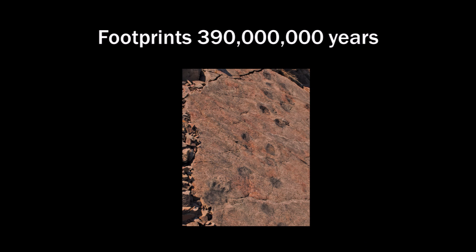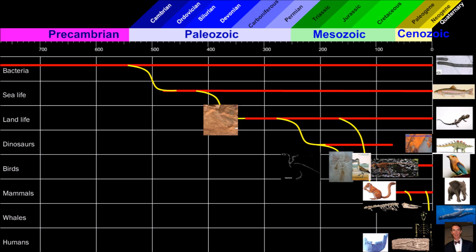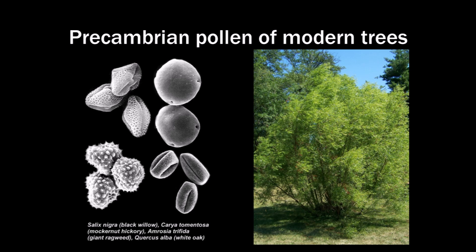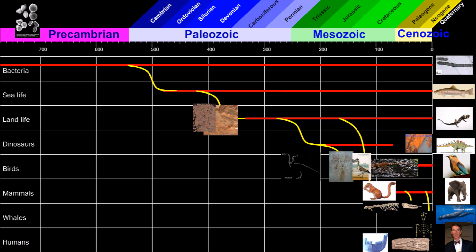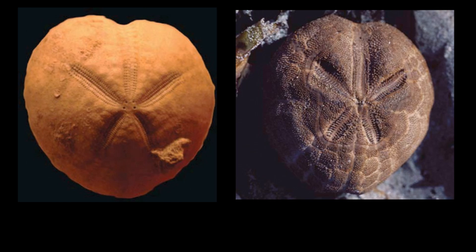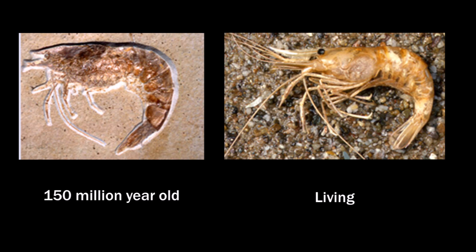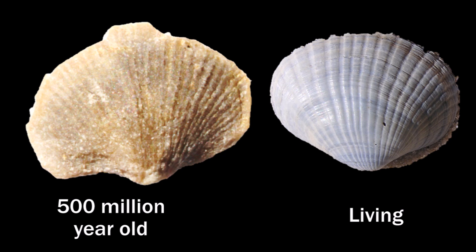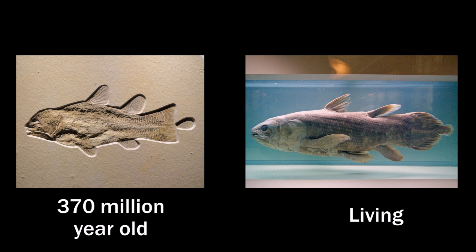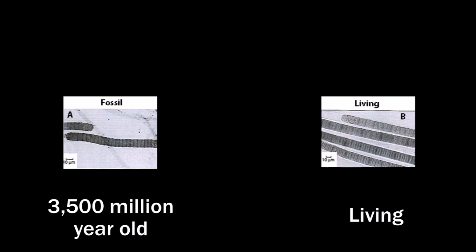Tetrapod footprints are found to be 10 million years older than the so-called transition Tiktaalik. There are pollen found of modern trees in the pre-Cambrian. And there are many, many living fossils — the age of fossils similar to today's species are in the hundreds of millions of years, even up to 3.5 billion years. Over 400 modern species are found buried together with dinosaurs.